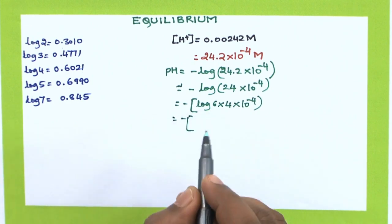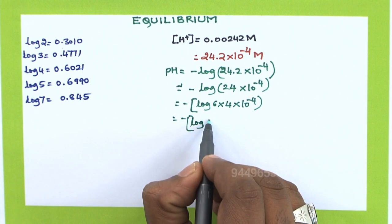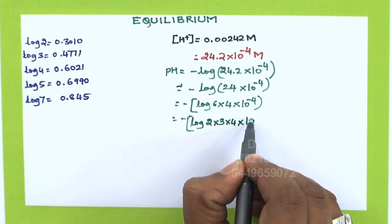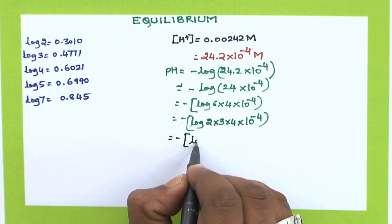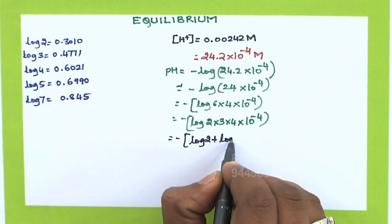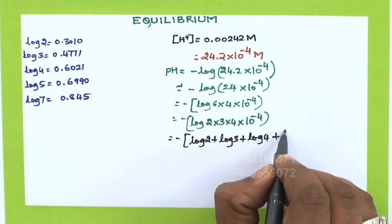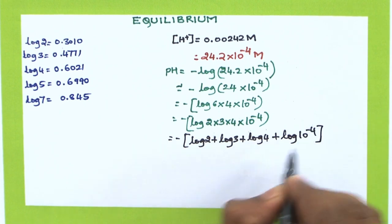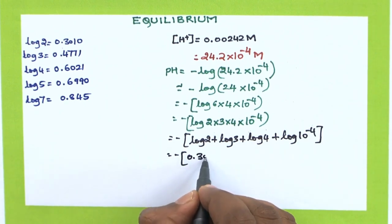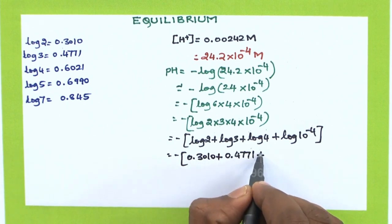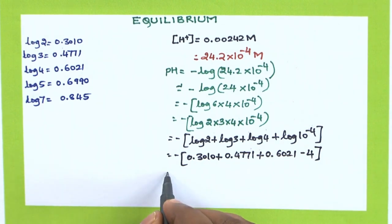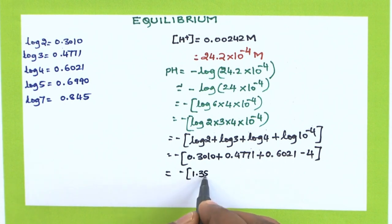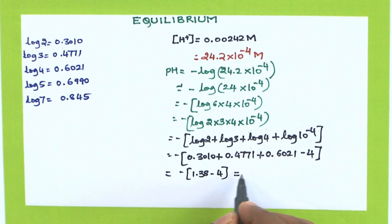So, −log(6 × 4 × 10⁻⁴). Since 6 = 2 × 3, it becomes −log(2 × 3 × 4 × 10⁻⁴). Using log(a × b) = log a + log b, this becomes −(log 2 + log 3 + log 4 + log 10⁻⁴). That is −(0.3010 + 0.4771 + 0.6021 + (−4 × log 10)). Since log 10 = 1, we get −(1.38 − 4), which is nearly equal to 2.6.